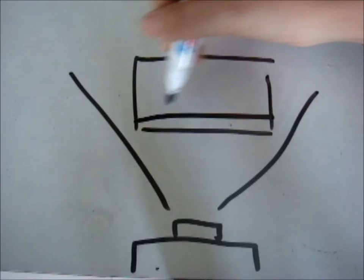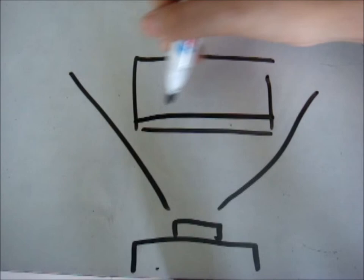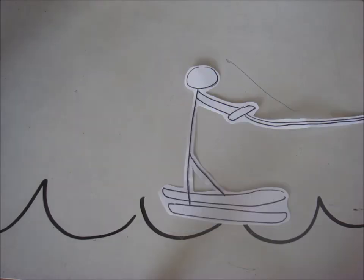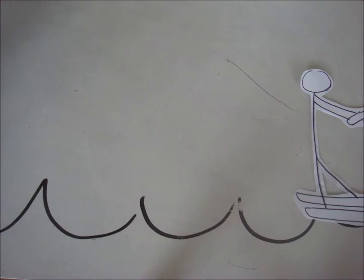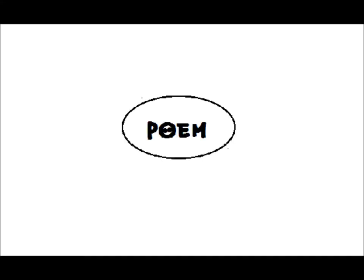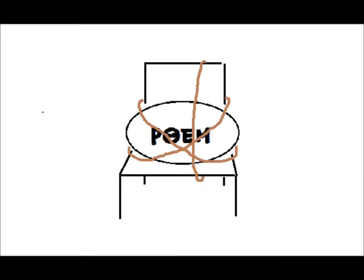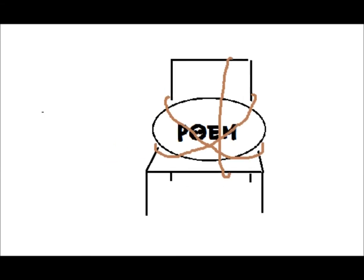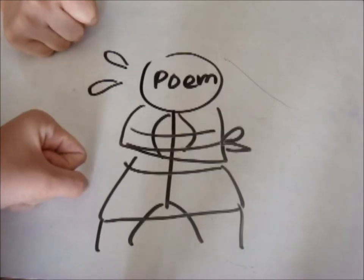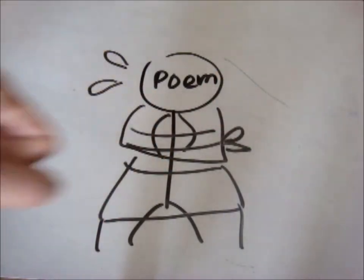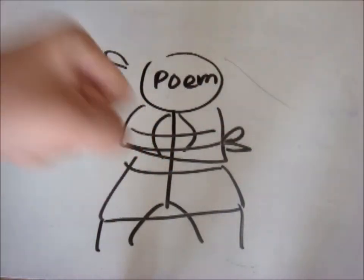I want them to waterski across the surface of a poem waving at the author's name on the shore. But all they want to do is tie the poem to a chair with rope and torture a confession out of it. They begin beating it with a hose to find out what it really means.